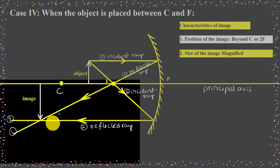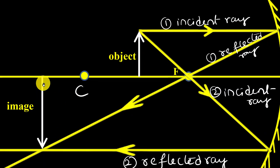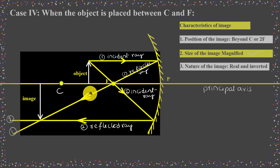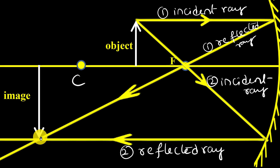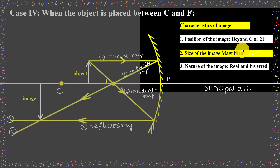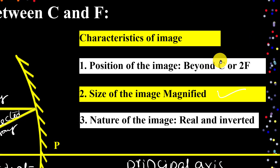Next is the size of the image. Observing the size of the object and size of the image, we can clearly say the image is bigger than the object — it is a magnified image. Now the last characteristic is the nature of the image. If converging rays produce an image, it is called a real image, and real images are always inverted. So the nature of the image is real and inverted. These are the characteristics: position is beyond center of curvature, size is magnified, and nature is real and inverted.